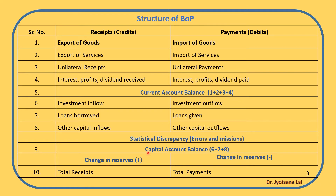Under the current account, points 1 to 4 show the total current account balance. The current account includes export and import of goods — these are visible items. It also includes export and import of services to and from other countries, such as banking, insurance, transportation, communication, medical, and health services. All their records are maintained in this account.